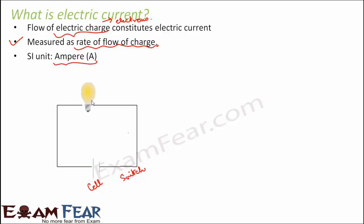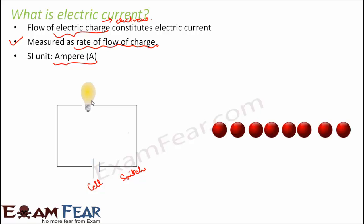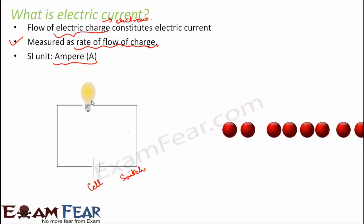Let us understand the concept of charges flowing by considering electrons as balls. Electrons are extremely tiny particles that cannot be seen even with the naked eye — only with powerful electron microscopes. As the first ball moves, the second moves, the third moves, and so on. The rate of their movement determines the current. When these balls stop moving, the current in the circuit is zero — current is determined by their movement, not merely their presence.